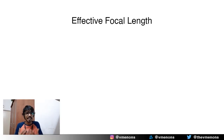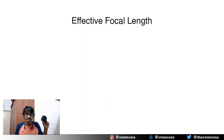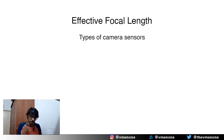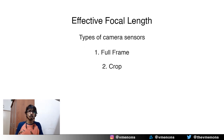Now you know what focal length is and how it affects your image, but there is just one more thing you need to know — the effective focal length. The effective focal length can be defined as what focal length you actually get to use. The focal length of a camera lens cannot be changed no matter what — if this lens is 50 millimeters it will always be 50 millimeters — but the focal length that you get to use in your camera depends on the sensor you are using, because there are different types of camera sensors.